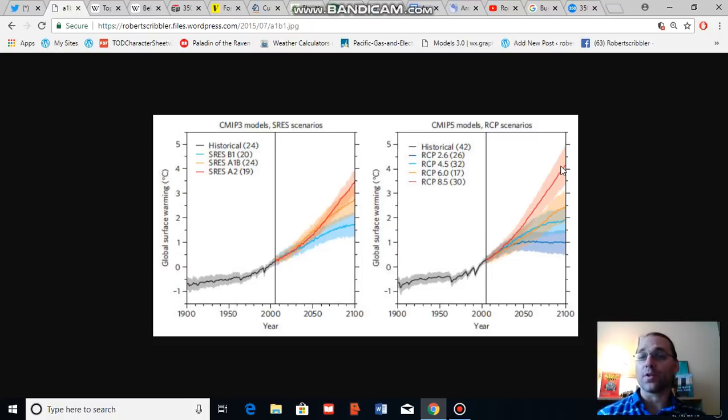If you get all four of those, you get the lowest range warming scenario. If you get very little of any of those, you get the worst case warming scenario.